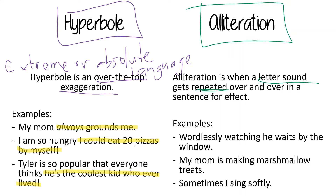Here I have: 'Wordlessly watching, he waits by the window.' Do you see how the sentence is full of W words? That sound gets repeated: wordlessly watching, he waits by the window. I actually borrowed this one from a famous song by Crosby, Stills, Nash and Young — so if that sounds familiar, maybe you've heard your parents play it on the oldies station.